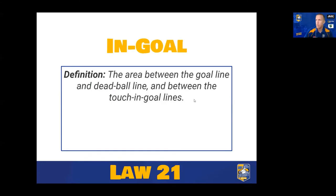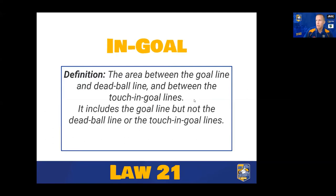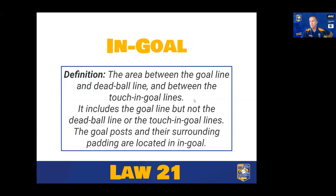Now that we've defined what touch is, we'll go through our in-goal law. The in-goal is the area between the goal line and the dead ball line, and between the touching goal lines. Importantly, it does not include the dead ball line itself, but it does include the goal line. It does not include the touching goal lines either. The goal posts and their padding are also part of the in-goal.